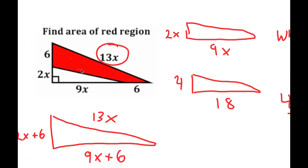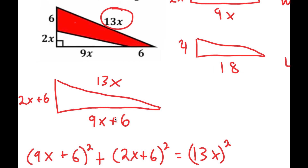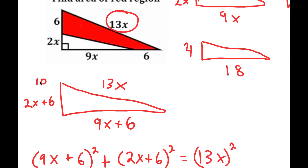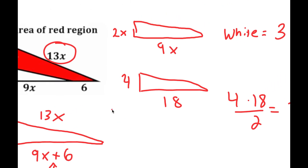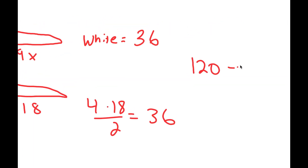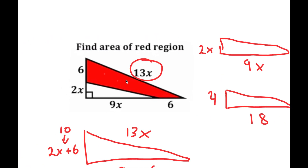To find the area of the total region, it's (2x+6) times (9x+6) over 2. With x equals 2, that's 10 times 24 over 2, which is 240 over 2, which equals 120. So the total area is 120. Therefore, 120 minus 36 equals 84, which is the area of the red region.